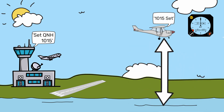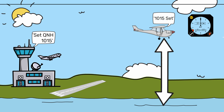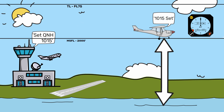From an air traffic viewpoint, QNH is used for calculating the transition level and minimum safe flying levels in the vicinity of an airfield. It can also be used as a landing datum.